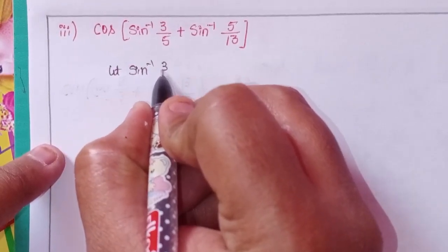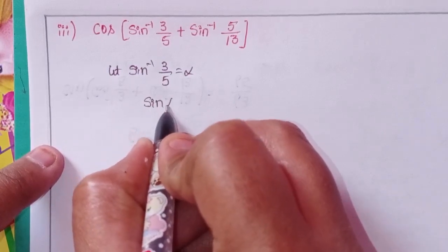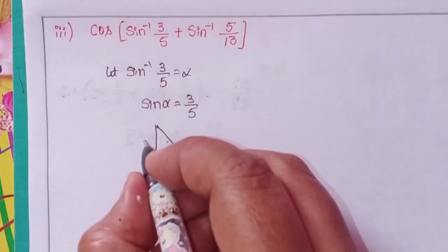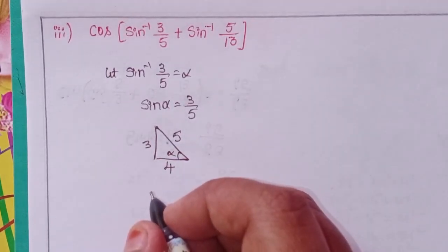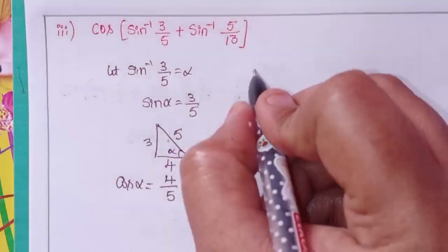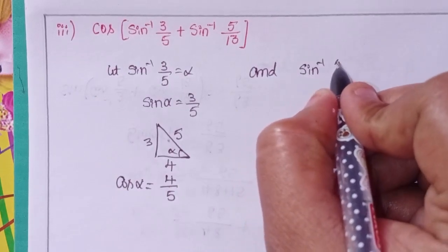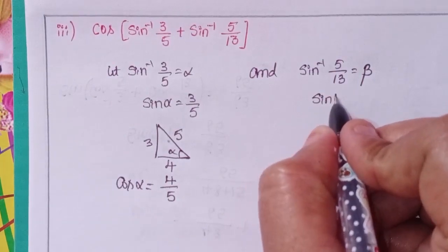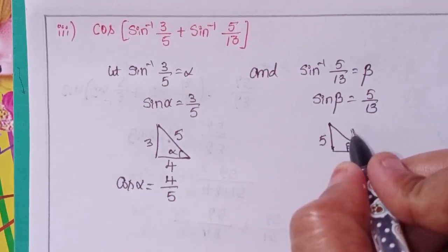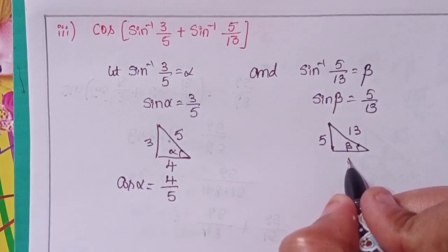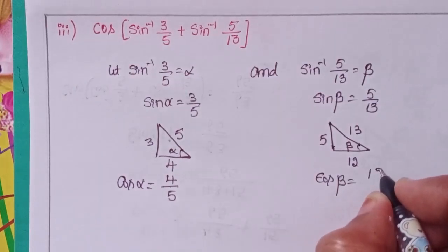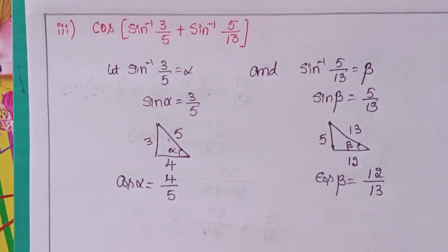For the third problem, let sine inverse 3 by 5 equal to alpha, so sine alpha equals 3 by 5. In the right triangle, the opposite side is 3 and hypotenuse is 5, so the adjacent side is automatically 4, giving cos alpha equals 4 by 5. Let sine inverse 5 by 13 equal to beta, so sine beta equals 5 by 13, and the adjacent side is 12, giving cos beta equals 12 by 13.